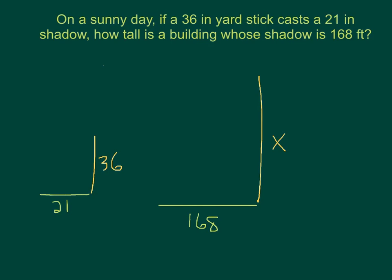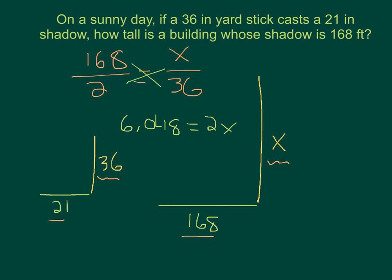So we can set up a proportion just like we've been doing. I can do 168 over 21, and that will be equal to X over 36. And now cross multiply like before. 36 times 168 equals 6048, and that's equal to 2X. So now divide both sides by 2, and you should get that X equals the building is 3,024 feet tall.